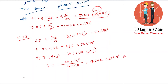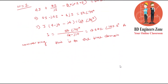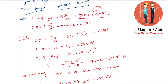So the time domain result is ready. In the time domain, i(t) equals 4.642 cosine of (2t plus the phase angle). You can take this equation — this is the final time domain solution.